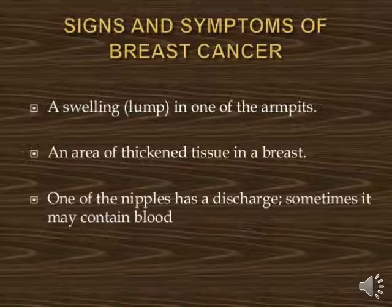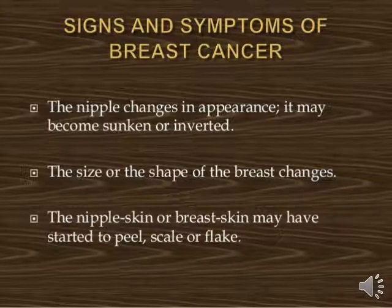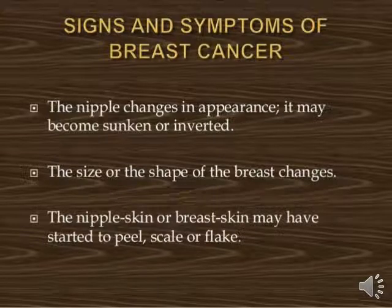Another sign is a change in the nipple appearance — it may become sunken or inverted. The size or shape of the breast may change due to the abnormal growth and development of breast tissue. Additionally, the nipple skin or breast skin may start to peel.